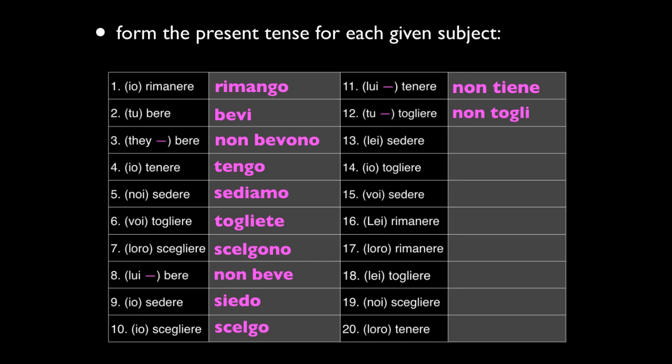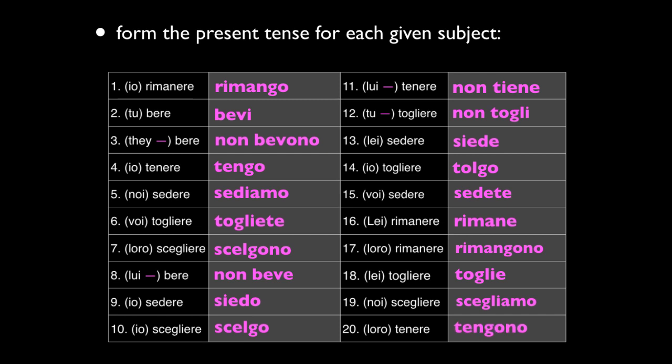Number thirteen: lei siede. Number fourteen: io tolgo — I remove. Number fifteen: voi sedere — sedete, you all sit. Number sixteen: Le rimane — you formal, rimane, stay. Number seventeen: loro rimangono — they stay. Number eighteen: lei togliere — toglie, she removes. Number nineteen: noi scegliere — scegliamo, we select. And number twenty: loro tenere — tengono.